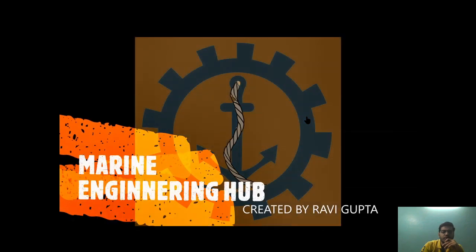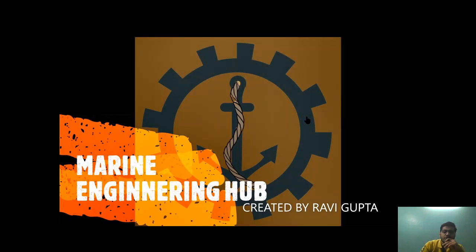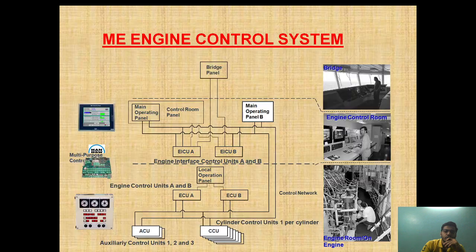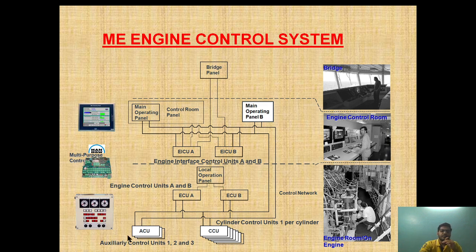Hello friend, welcome to Marine Engineering Hub. This is narrator Ravi Gupta. Today we are going to talk about the cylinder control unit and auxiliary control unit. This is part 3 of the main engine control system. In part 1, I talked about the designation of the ME engine. In part 2, I talked about EICU and ECU, how the signal is processed and how everything is controlled.